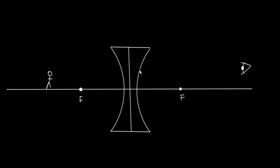Now we use a very similar technique of ray tracing to what we used before. So our first ray, we draw from the top of our object, parallel to the axis of the lens.